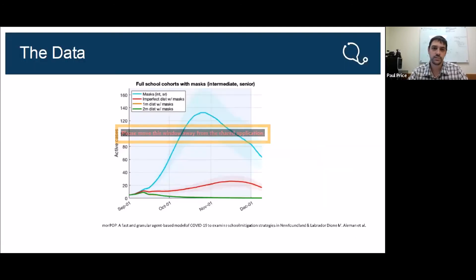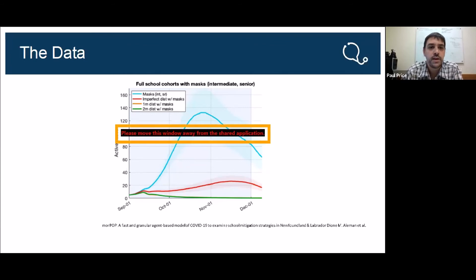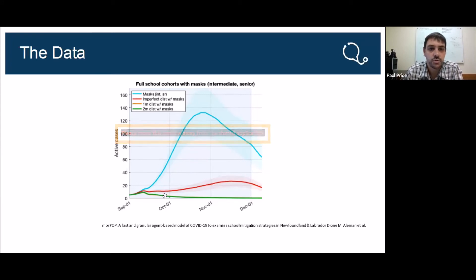We plot out the simulation results to see what they look like. For instance, in one case here we ran full school cohorts with masks for junior and senior high. The graph shows that if you all wear masks in intermediate and senior high, what your active cases are. With social distancing and masks, it brings it down a lot more. Even imperfect mask wearing with social distancing is still better than not having a mask on at all — you can see it levels out and flattens.